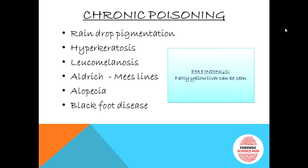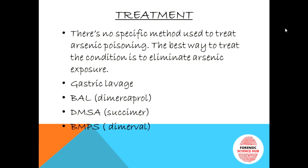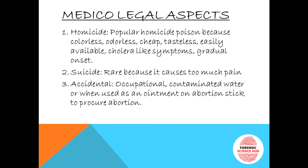Regarding treatment: there is no specific treatment. The most important step is to eliminate the exposure — remove the source of arsenic. Then gastric lavage is done repeatedly with large amounts of warm water and milk. Activated charcoal does not absorb arsenic and is therefore not recommended. The important antidote is BAL, also known as dimercaprol. Another important antidote is DMSA or succimer, and also DMPS or dimercaprol sodium.